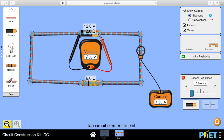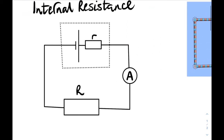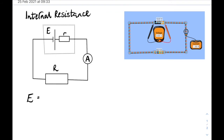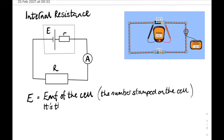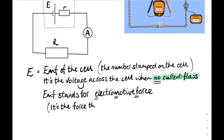You can only measure the EMF when no current flows. As soon as you put a resistor in and current starts flowing, the battery starts losing energy inside itself through heating. The useful output voltage is less than the EMF. With a 6 ohm resistor we're only getting 9 volts of useful voltage - 3 volts has been lost. The letter E is used to show the maximum voltage stamped on the cell: for example, 1.5 volts on a normal battery. EMF stands for electromotive force - the force that moves the electrons.